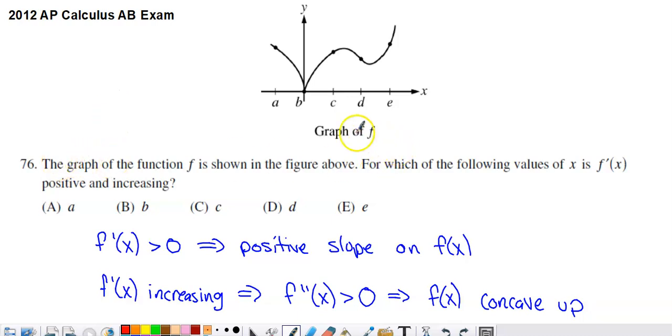But if you check out what we have access to, we have this graph of f. We've got these points along the x-axis here labeled, not really specified with specific values, just A, B, C, D, E. And then we're told that the graph of f is shown in the figure above.